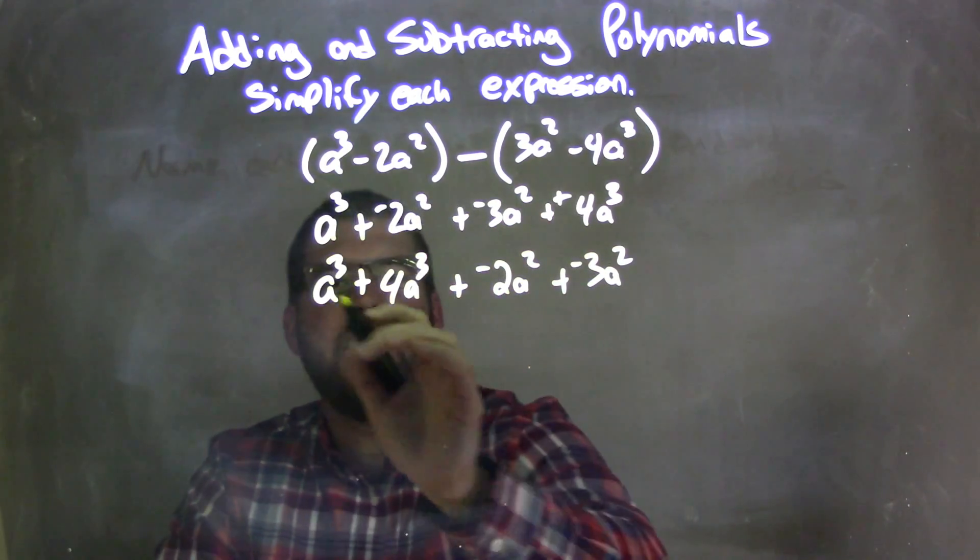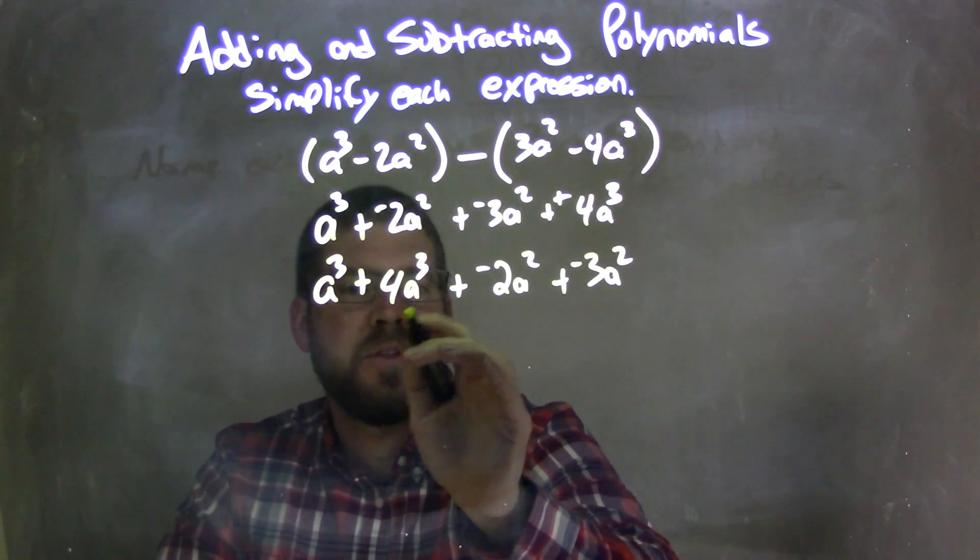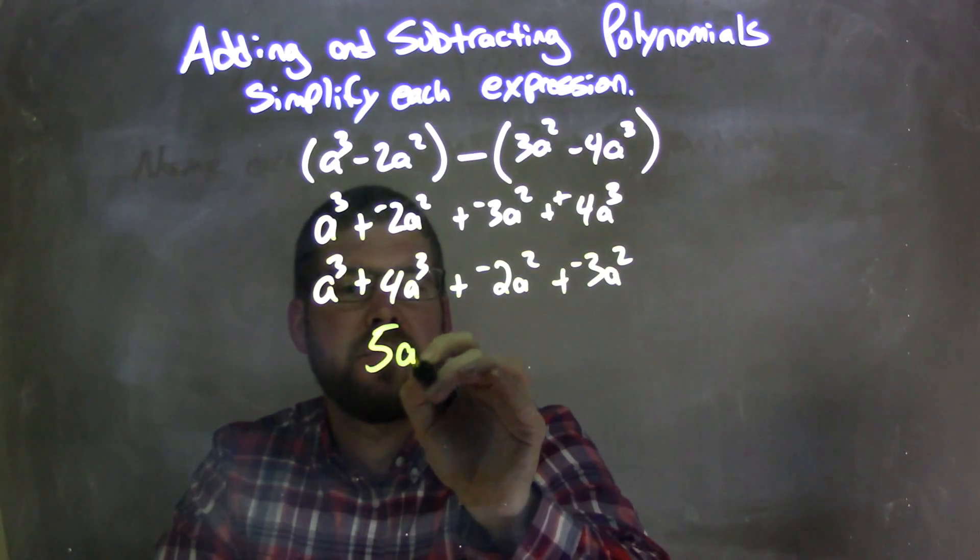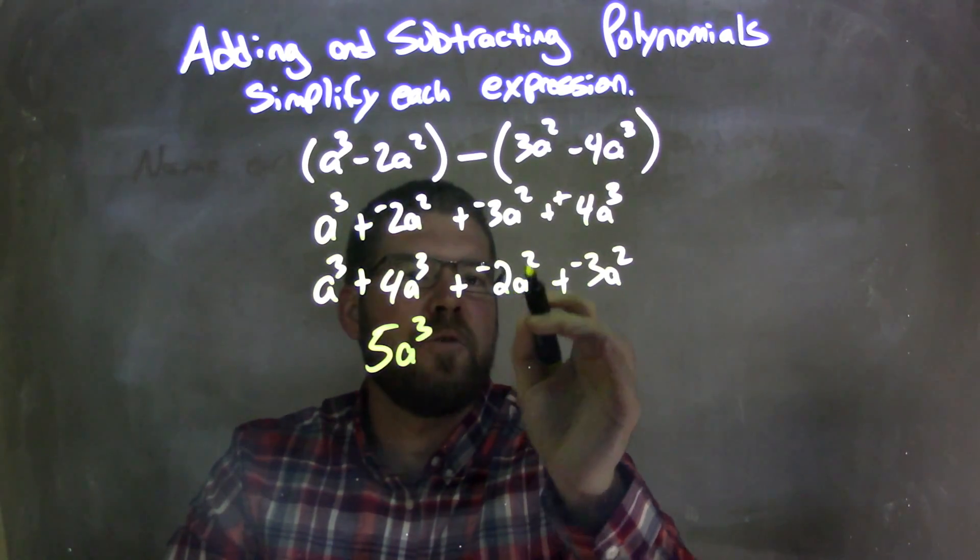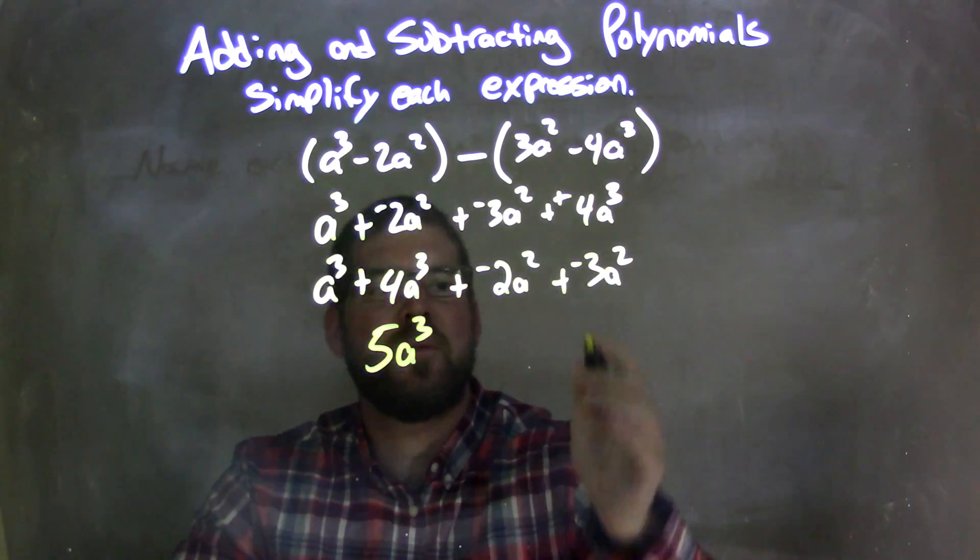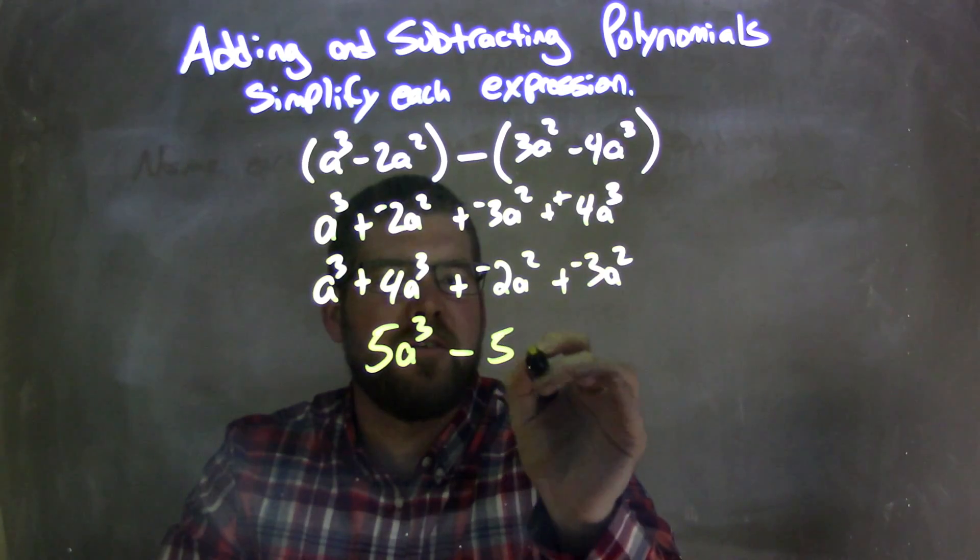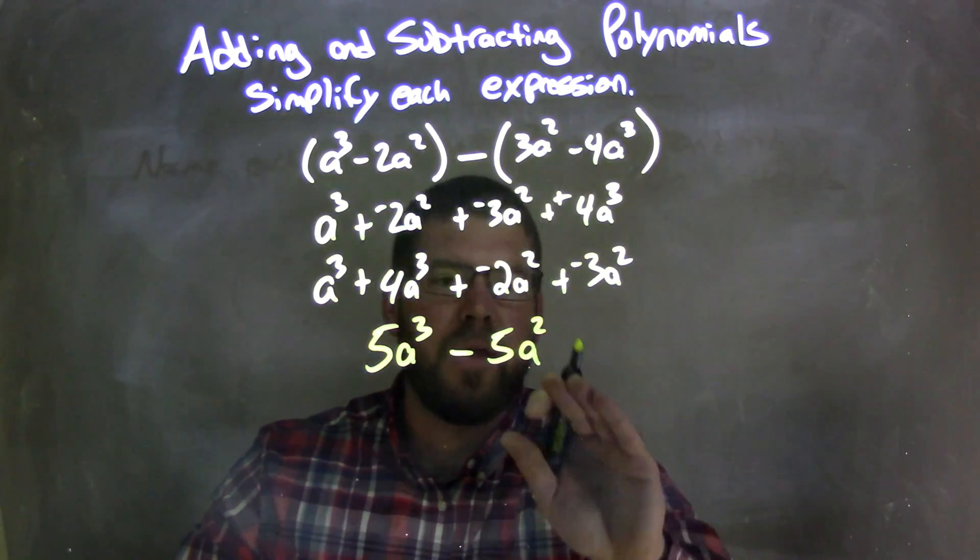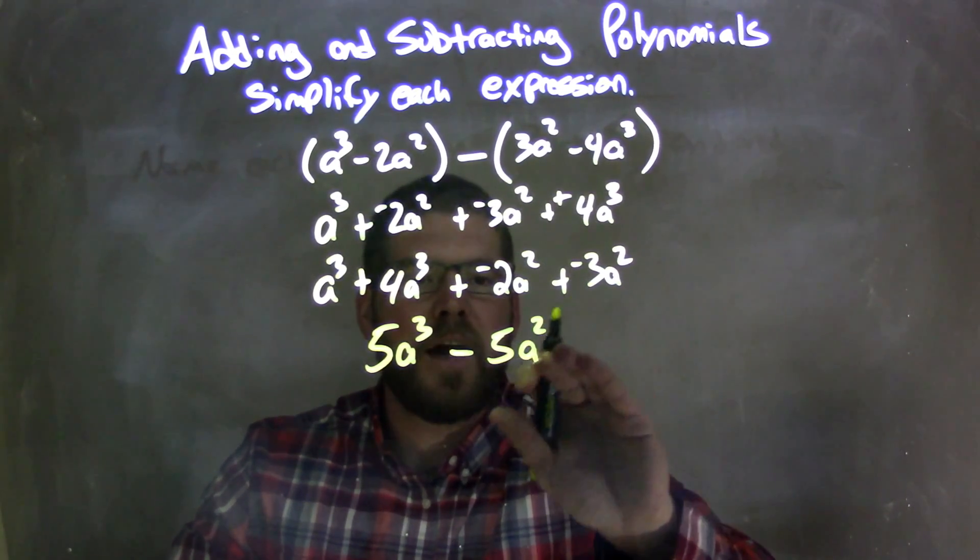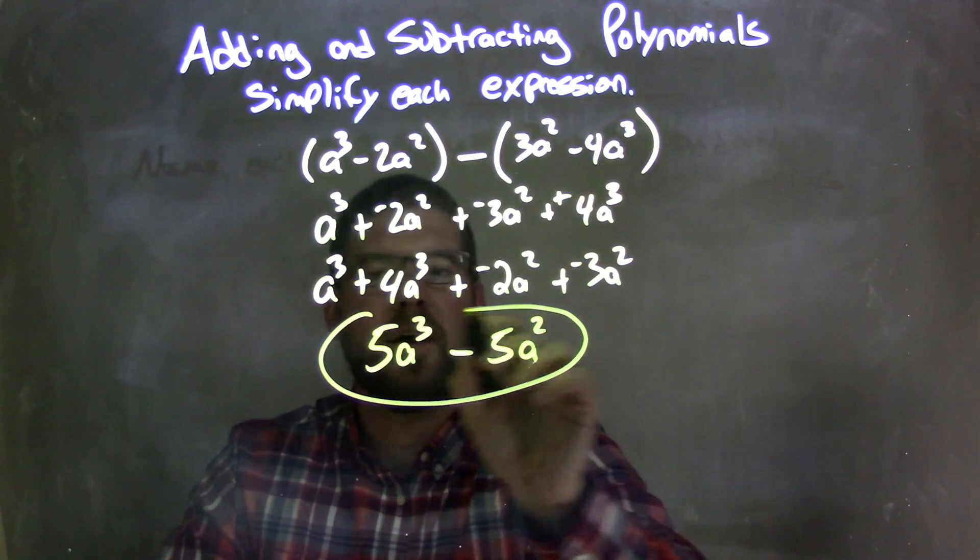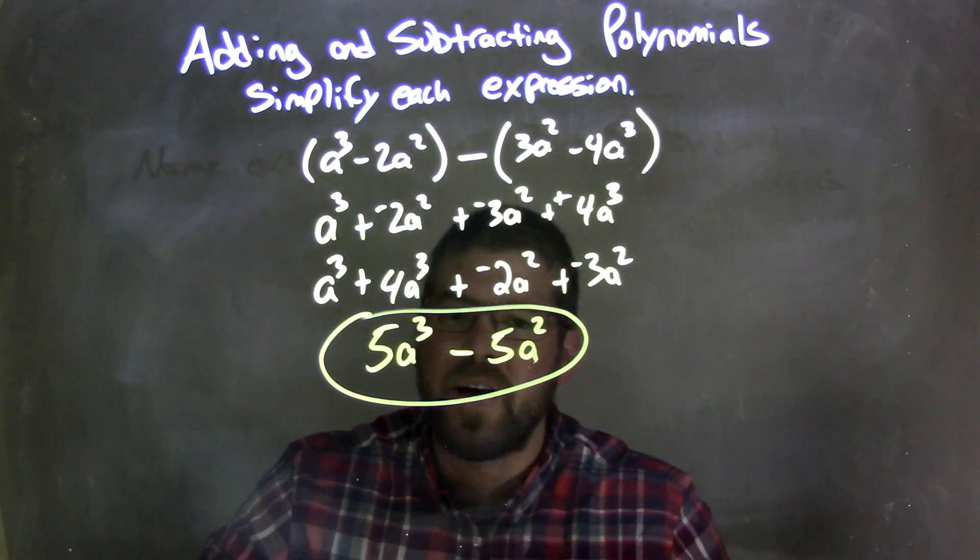Now we combine our like terms. a to the third plus 4a to the third is 5a to the third. And then negative 2a to the second plus a negative 3a to the second is negative 5a to the second, or minus 5a to the second. And there we go. We have our final answer here. It's simplified. It's 5a to the third minus 5a to the second.